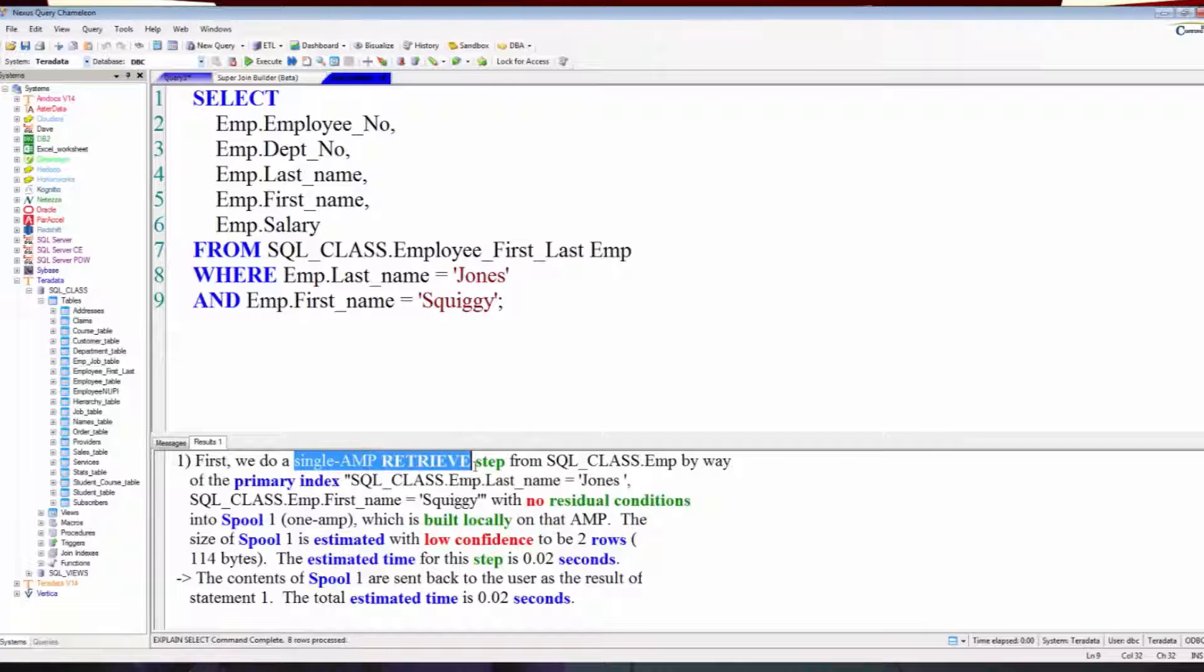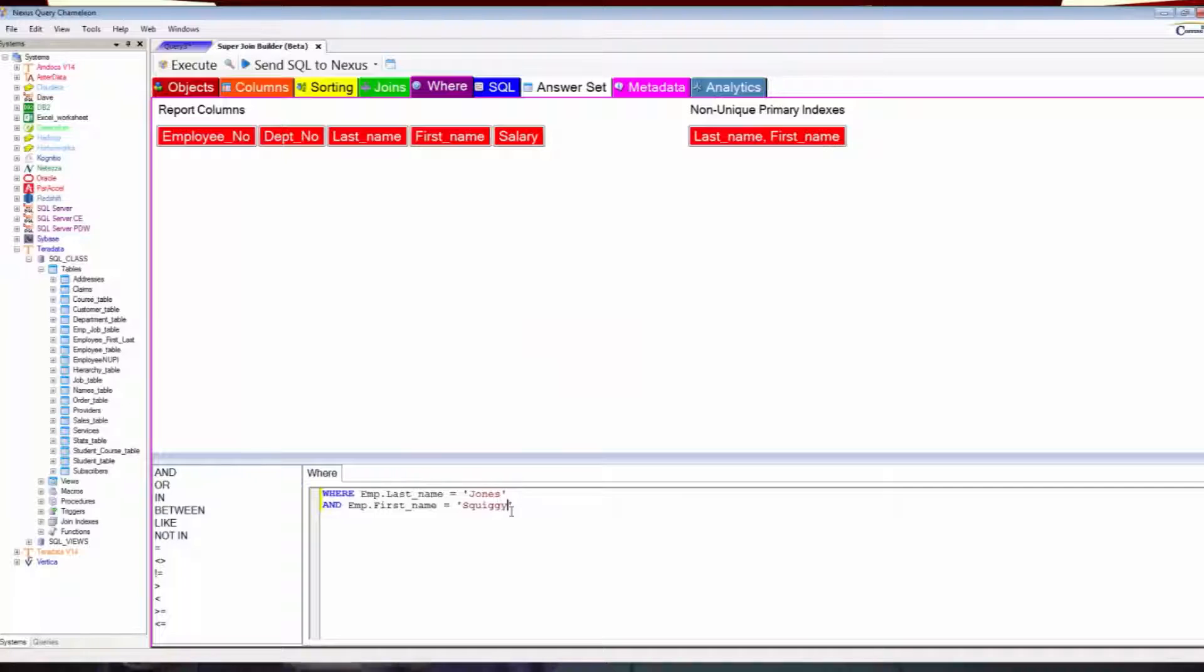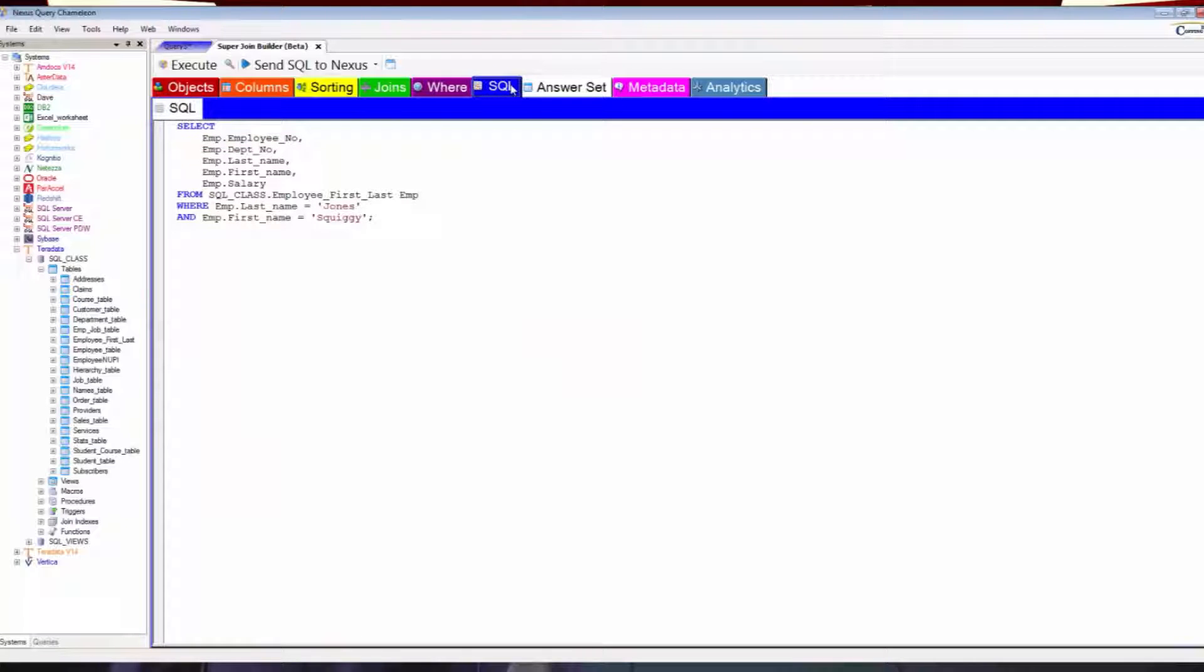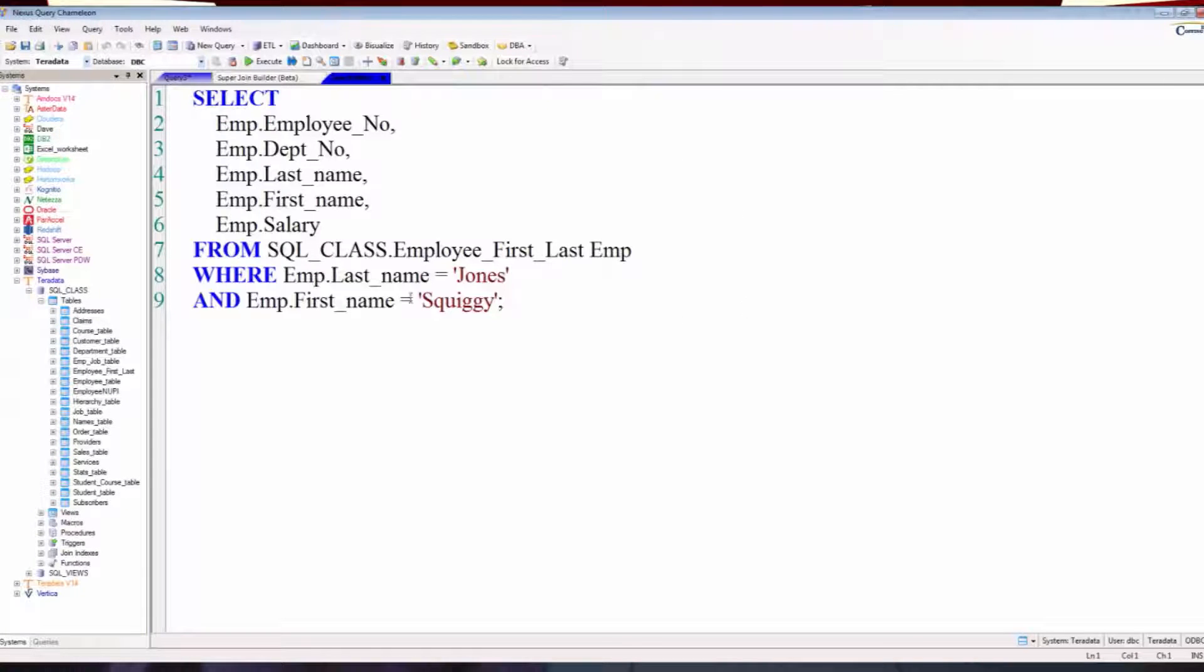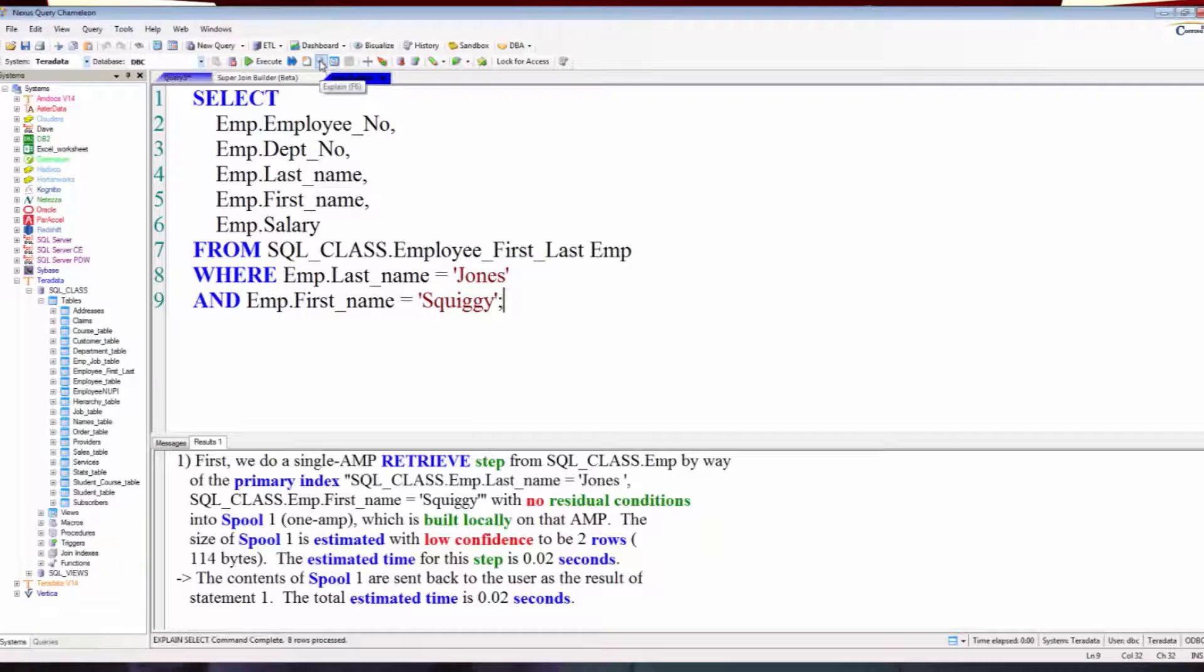Sometimes people say, you use one of the indexes, it's partial, it'll help. It ain't helping. It's like going to a party and saying, 'Can I get your number?' And they go, 'Yeah, here's my area code.' It ain't going to do it. You need the whole number. If you're going to make the call, you need both the first name and the last name in the SQL if it's going to be a single AMP retrieve.